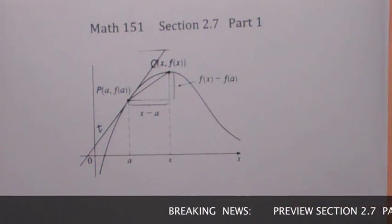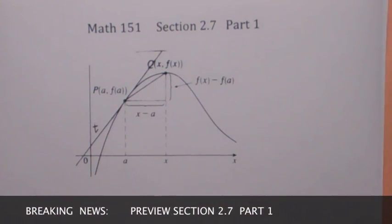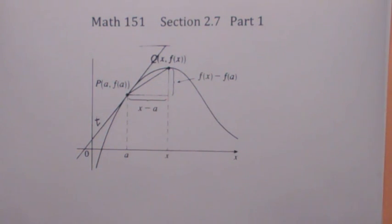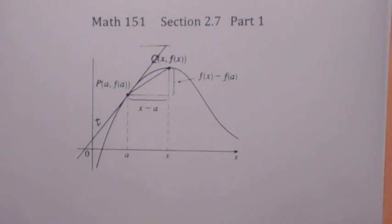Welcome back. Remember a long time ago we started the course talking about slopes of tangent lines, and then I mentioned that we really need to focus on limits for a while, and we studied 2.2 to 2.6. We've been learning about limits and continuity. Now we're coming back. We're going to spend the rest of the quarter talking about slopes of tangent lines now that we know a little bit about limits.